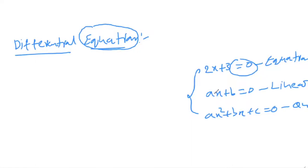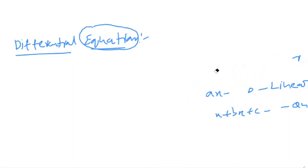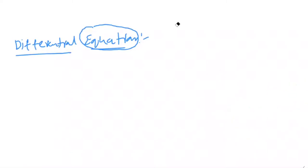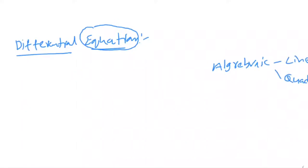Now you can clearly comment the answers to the previous questions. These types are called algebraic equations — linear and quadratic equations involving variables like x, y, and z. Now, coming to differential equations.